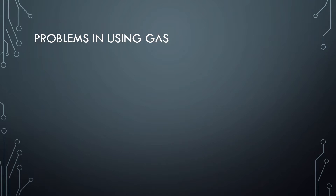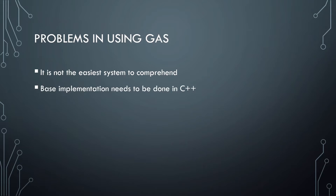So what are the caveats of choosing the Gameplay Ability System? This is not the easiest system to comprehend and there was very little documentation — though they have now improved on that. The base implementation of this system is inside of C++, and there's very little support for blueprints. The groundwork has to be done inside of C++, which is what we'll do in this series. Not all of the functionality is exposed to blueprints.